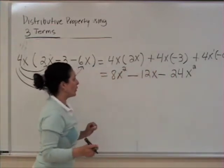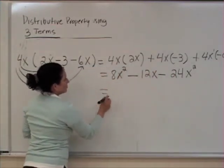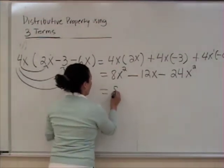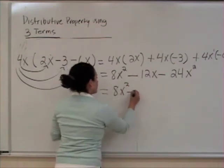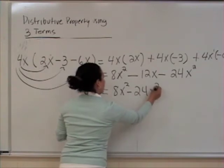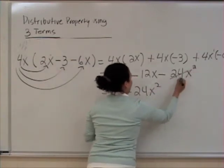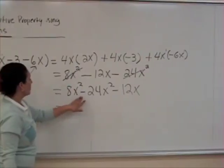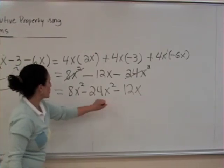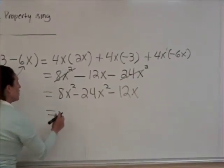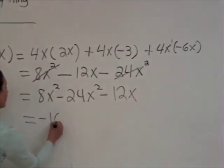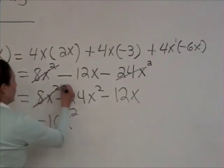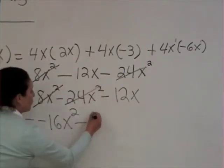We add the exponents. So we have 8x squared minus 24x squared minus 12x. Then 8x squared plus negative 24x squared is going to be negative 16x squared. So we get negative 16x squared minus 12x.